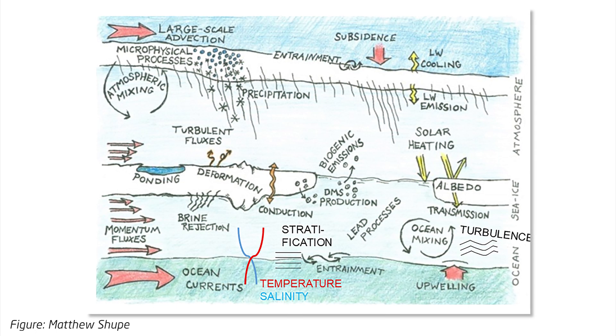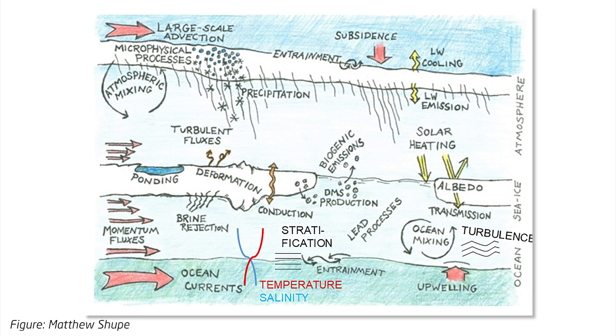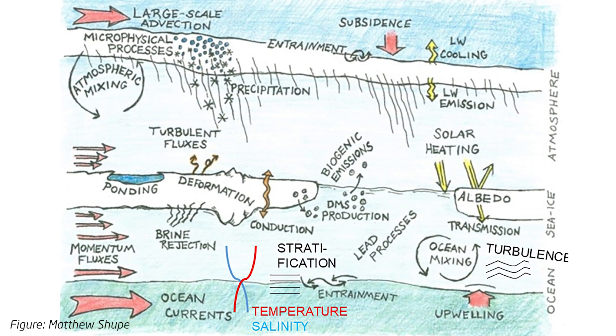Here you can see a schematic of the different processes that we're interested in studying during Mosaic. We're focusing on the smaller scales — by scales I mean things that are large or small in space. We focus on things that we can usually not observe with our long-term large-scale observing systems. We are particularly trying to study what happens in the atmosphere, things like cloud formation, how that interacts with the surface — for example the sea ice and the snow or the ocean below. The interaction between these different parts is particularly important, which includes the ecosystem and biogeochemistry.